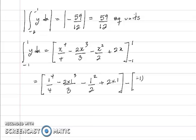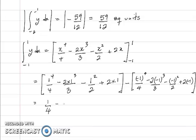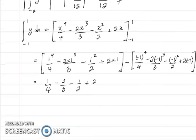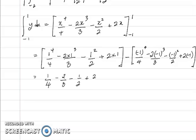Substituting x = -1: we have minus 1 to the 4th over 4, minus 2 times minus 1 cubed over 3, minus minus 1 squared over 2, plus 2 times minus 1. This simplifies to a quarter minus 2 over 3 minus a half plus 2, and the right-hand side we already worked out in the previous integration — that value was minus 19 over 12, so this becomes minus minus 19 over 12.